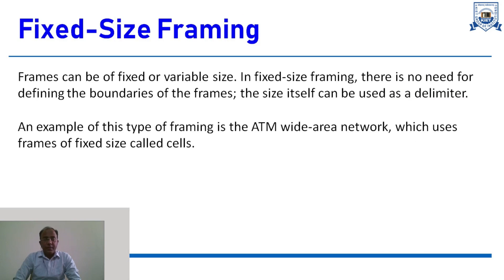The first type is fixed size framing. Frames can be fixed or variable in size. In fixed size framing, there is no need to define the boundaries of the frame — the size itself acts as the delimiter. The block size of all data moving in bits is fixed, and we always use the same size as the delimiter. The best example is the cells used in ATM (Asynchronous Transfer Mode) networks, a type of network used for high-speed data transfer.